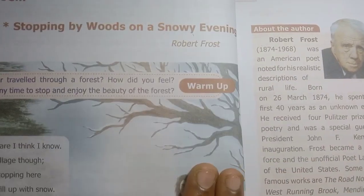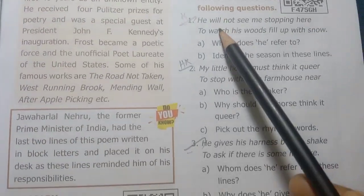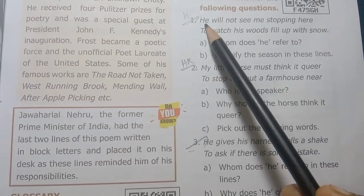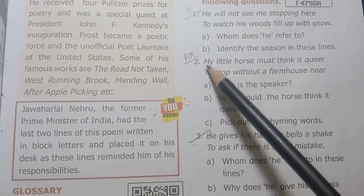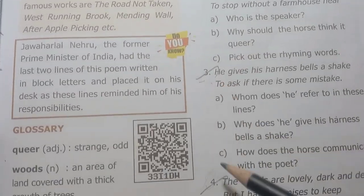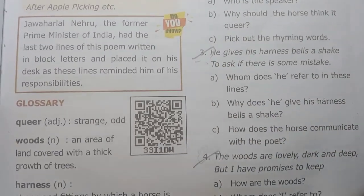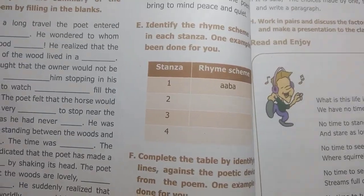Poem: Stopping by Woods on a Snowy Evening. Page number 19. First one is a half-yearly question — this is repeated. Second one. Third and fourth one are important. Appreciation questions.